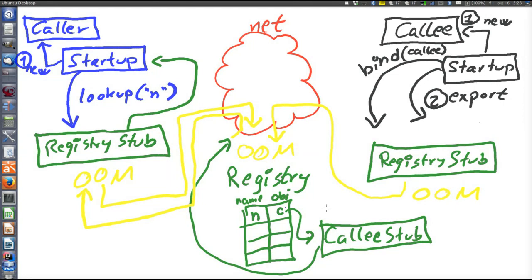Haven't we just postponed the problem? Instead of having one stub whose origin was difficult to explain, we now have two stubs — or at least one stub appearing in two places — the registry stub. How did the caller and callee obtain the registry stubs? Well, the registry is created by the same organization that developed the object-oriented middleware. So the registry stub is hard-coded into the OOM. Any node that can use the object-oriented middleware already has a registry stub that can be used to make remote calls to the registry.